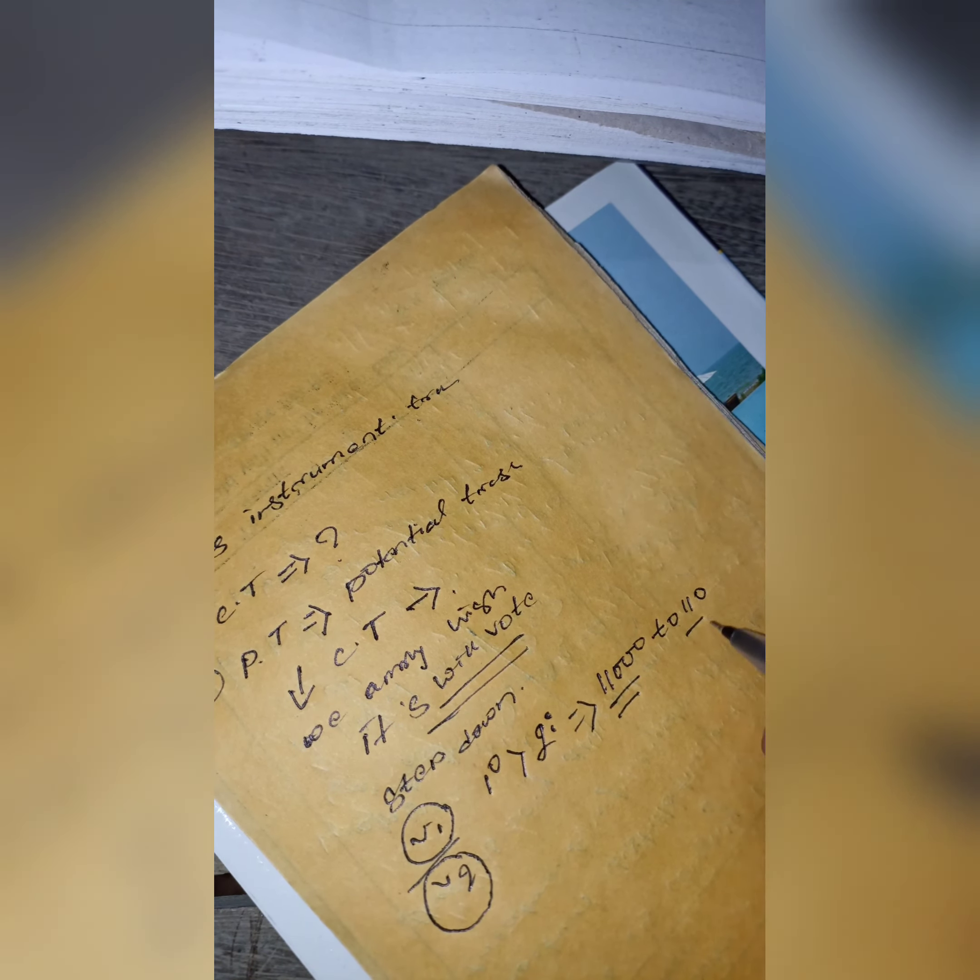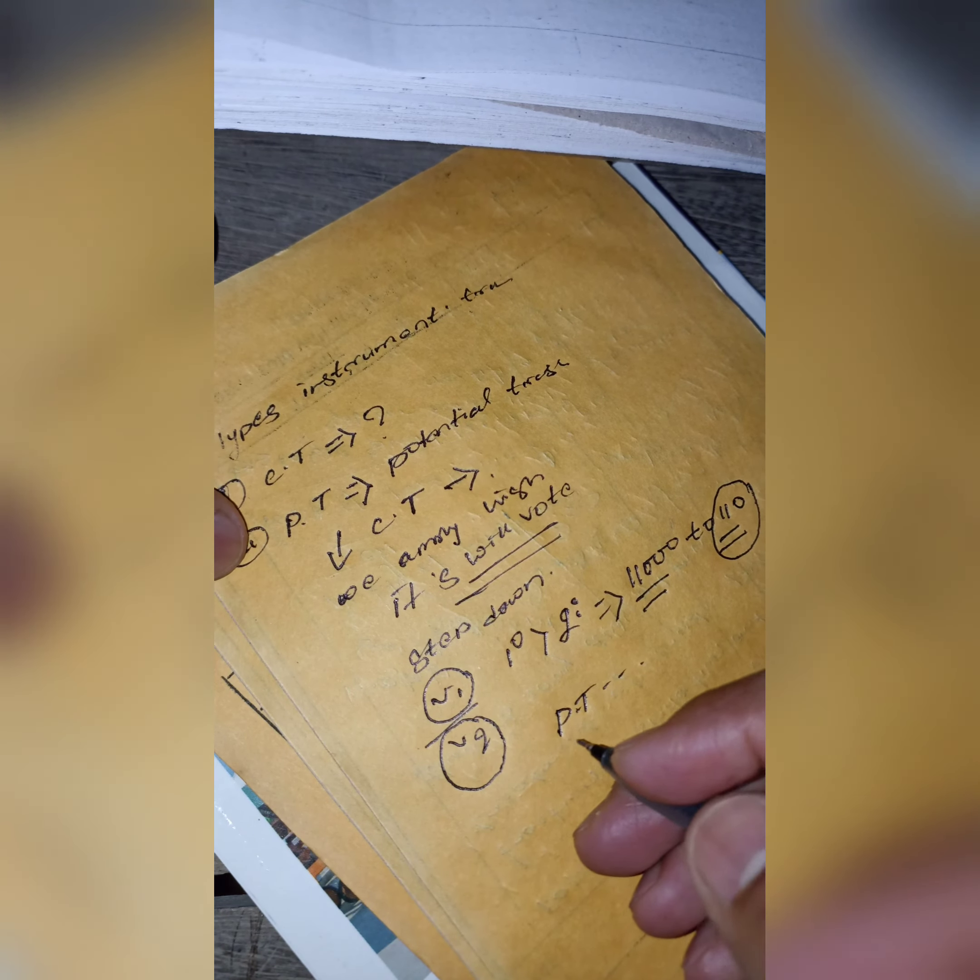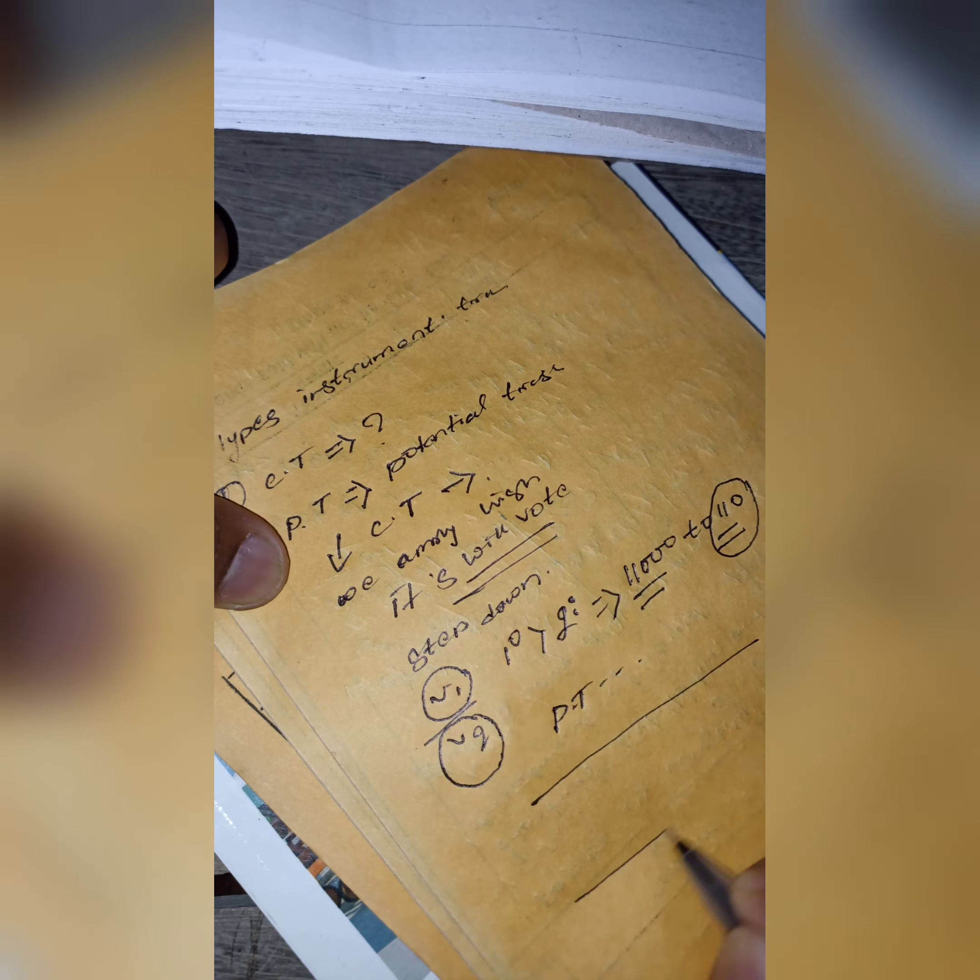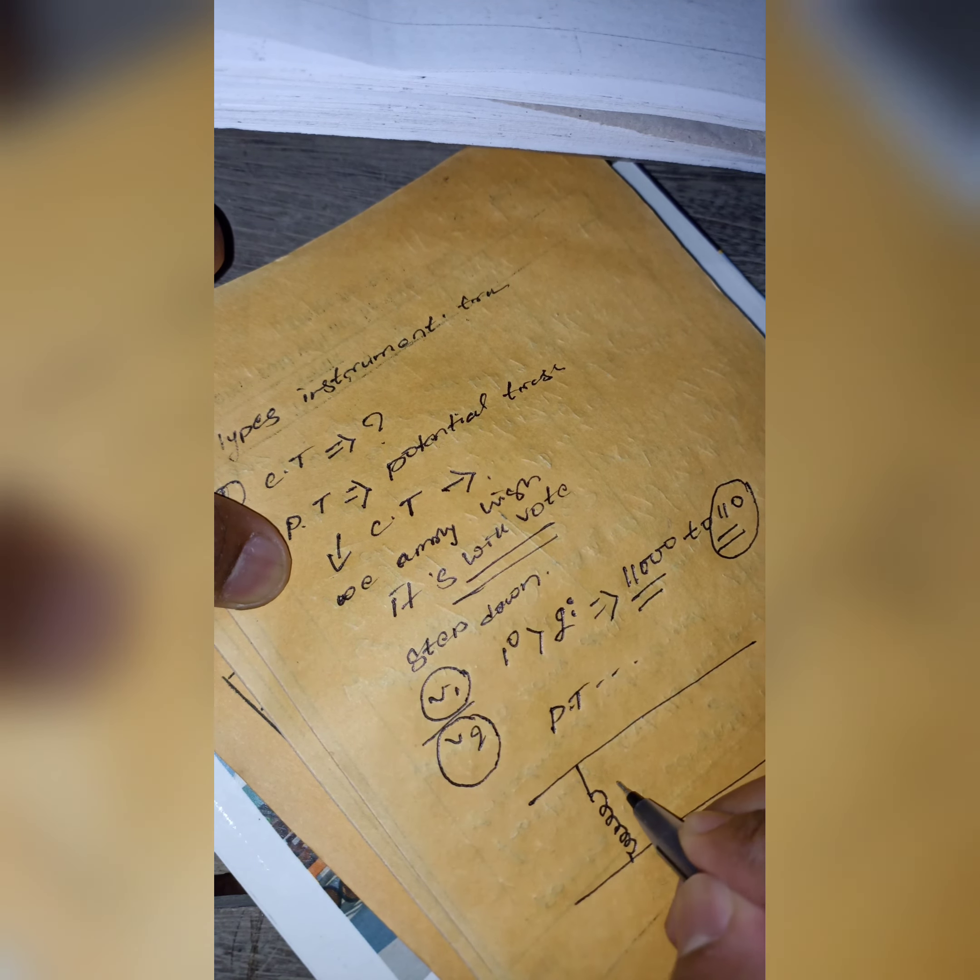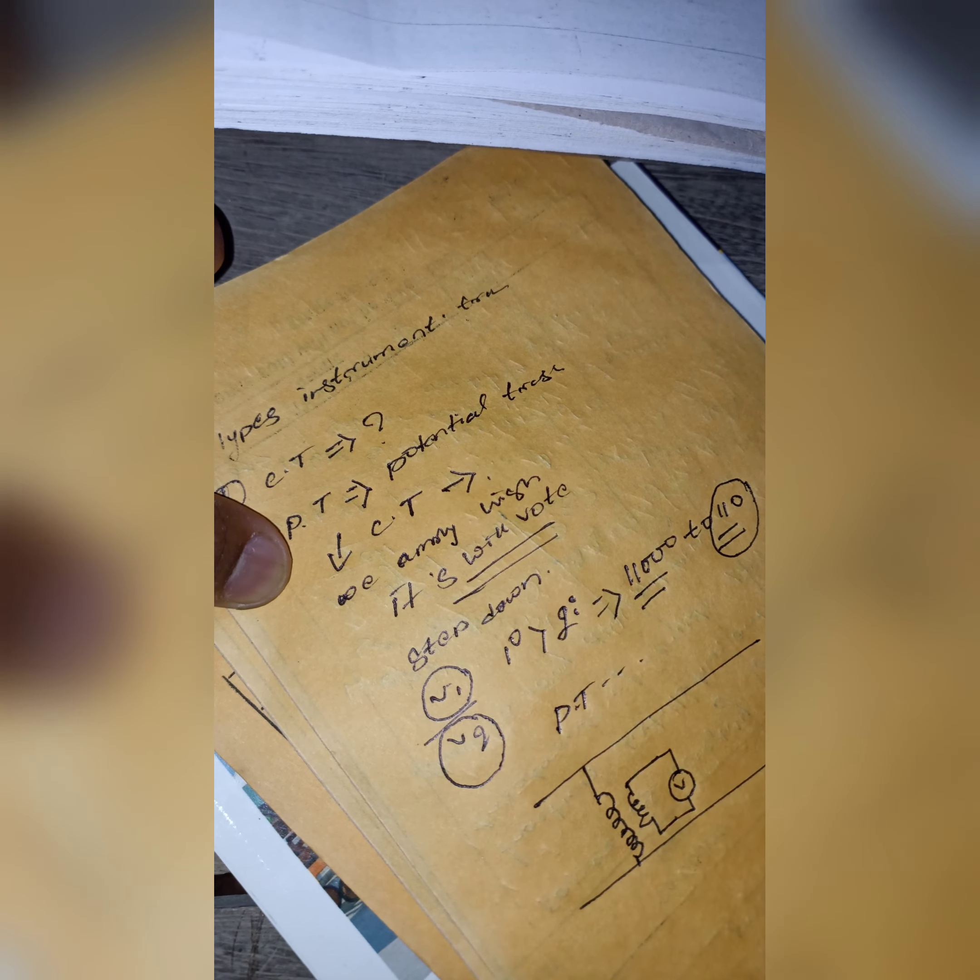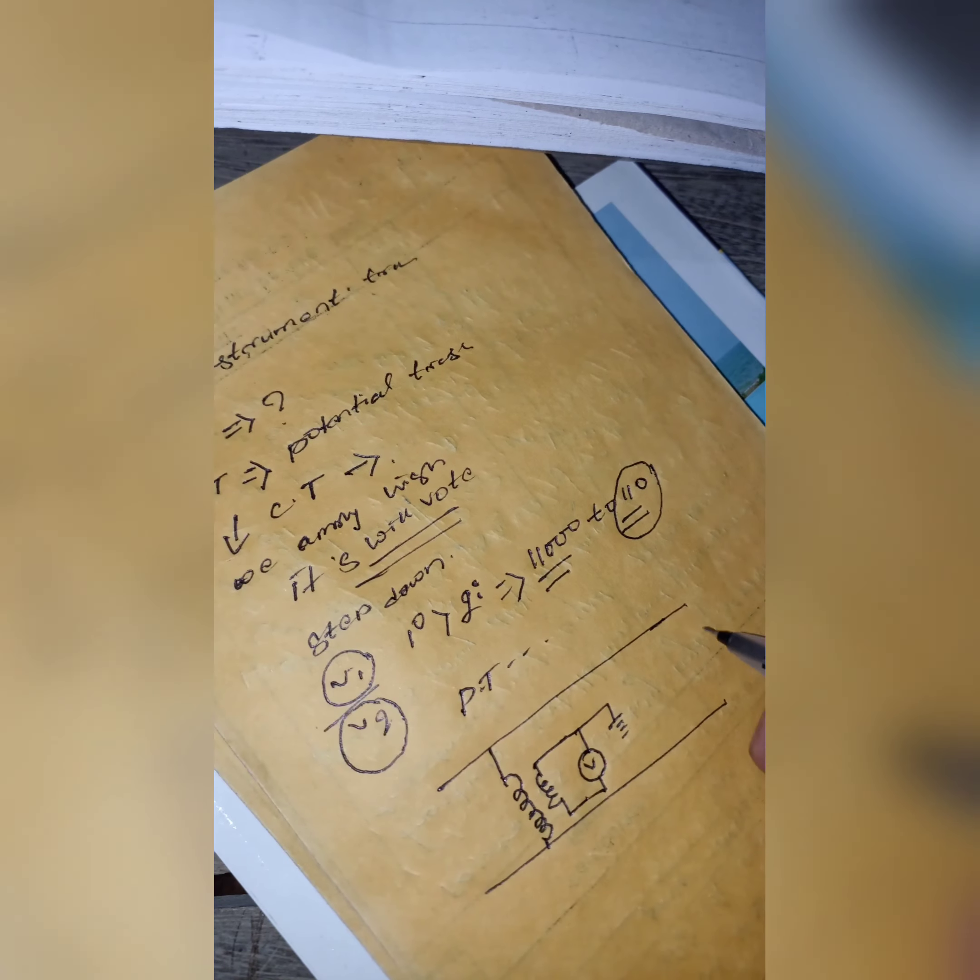Let's see the figure of potential transformer. See, this is my high number of turns, and this is my low number of turns that is connected with voltmeter. It is grounded for safety purpose, and this is connected with load.